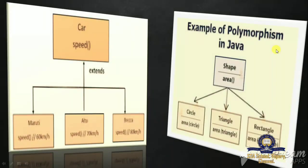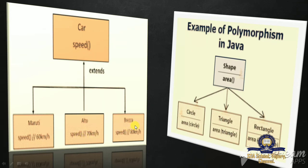Let's see another example. Here, there are three functions: Marutti, Alto, and Brasso. These three functions have the same behavior, that is, speed — but according to the characteristics of the car, the speed will be different. For example, Marutti's speed is 60 km, Alto's speed is 70 km, and Brasso's speed is 80 km. The behavior — speed — is the same for all functions, but the values differ. These all come under one class, that is, car. The car has different functions but these functions share a common property, which is speed.